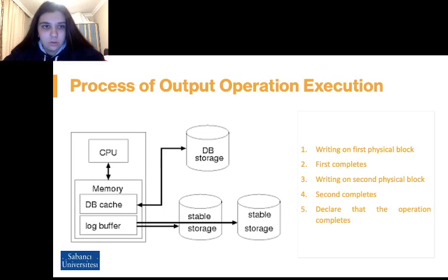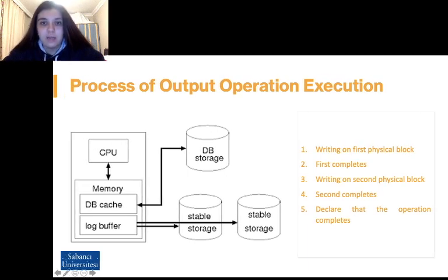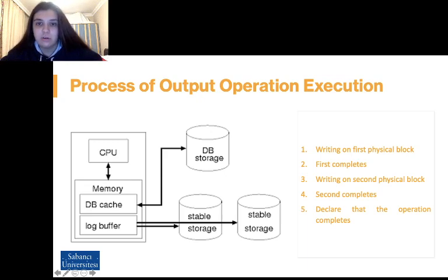The figure here explains the process of output operation execution. During writing a block, if a failure occurs, the system's first task is to detect the failure and then invoke a recovery process to restore a consistent state. To do that, the system must contain two physical blocks for each logical block.